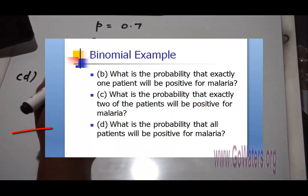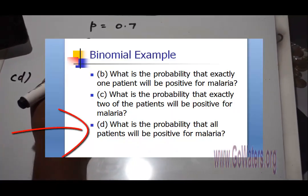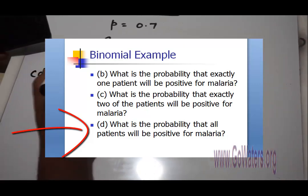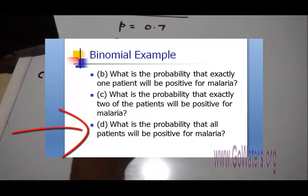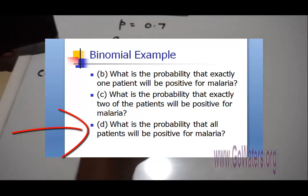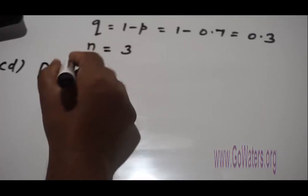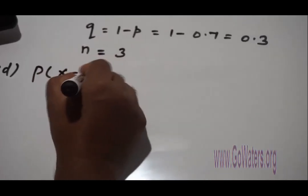The question D is, what is the probability that all patients will be positive for malaria? Probability of all patients means here n equals 3. You have only 3 patients and all 3 are positive, so x equals 3 here.